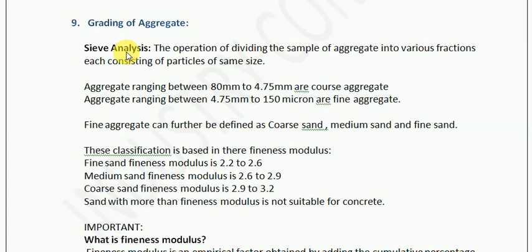So if I have a sample, I identify that particular range of size in the sample, then set another category. Aggregate ranging between 80mm to 4.75mm are coarse aggregate. Aggregate ranging between 4.75mm to 150 micron are fine aggregate. Fine aggregate is that which is retained on 150 micron sieve. This classification is how we say a coarse aggregate or a fine aggregate.